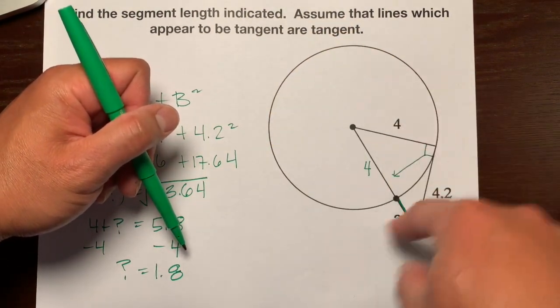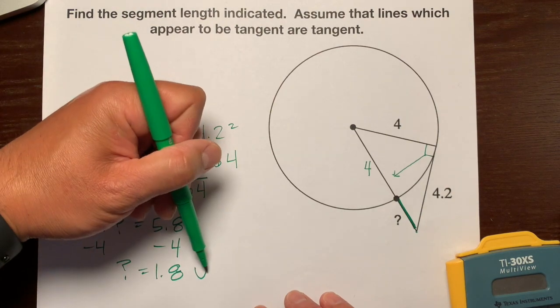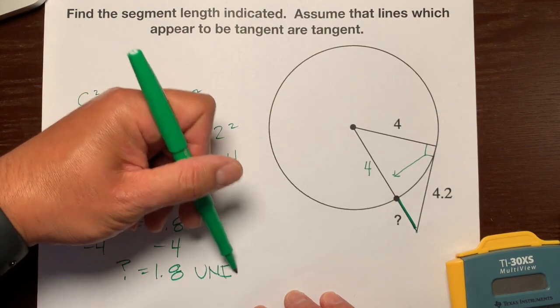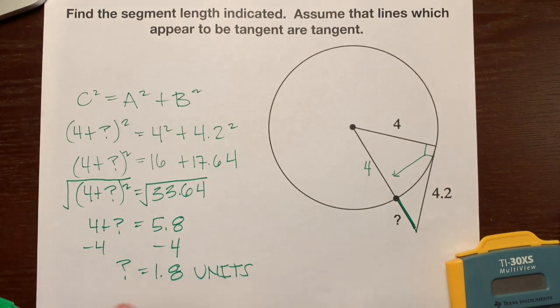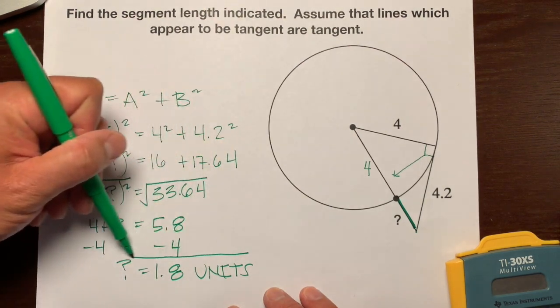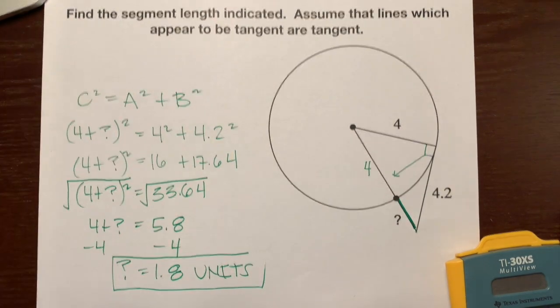There aren't any units. So we're just going to write units. That looks like a V, so we'll write the word out. So units. So there's your final answer. Question mark is 1.8 units.